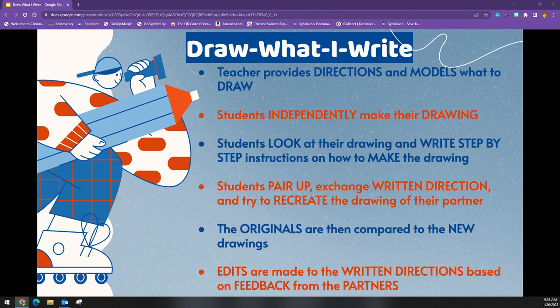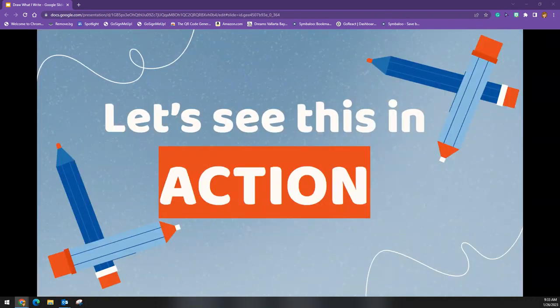It is then time for the students to pair up, exchange those written directions, and try to recreate the drawing of their partner. The originals are then compared to the new drawings, and edits can be made to the written directions based on feedback from their partners. So let's see this in action in a fifth grade OMSD classroom.